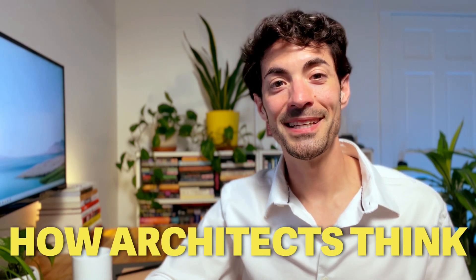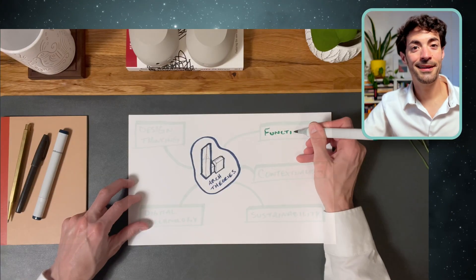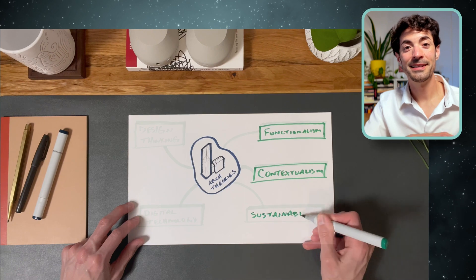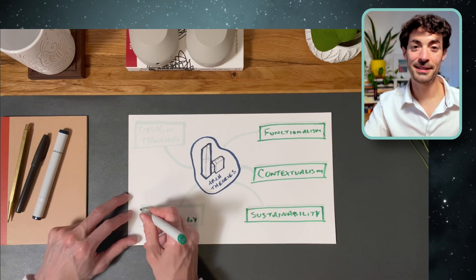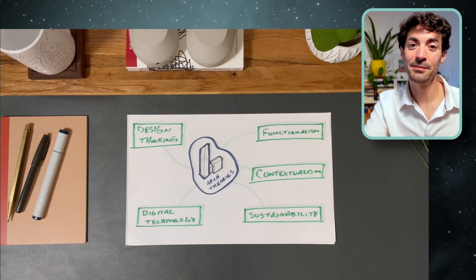If you're looking to understand the architect's mindset, then welcome to today's discussion where we're going to go into how architects think to create innovative architecture. We're going to dive into a five-part discussion covering key theories that have shaped our built environment: functionalism, contextualism, sustainability, digital technology, and the design thinking movement.